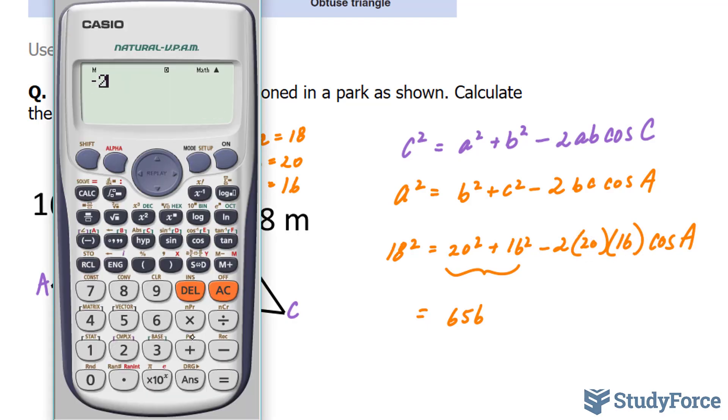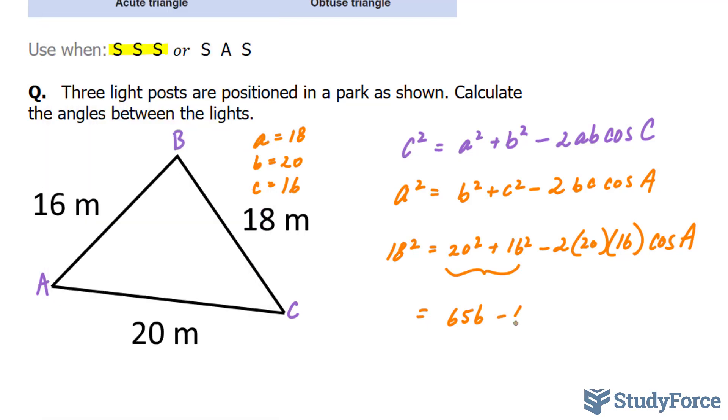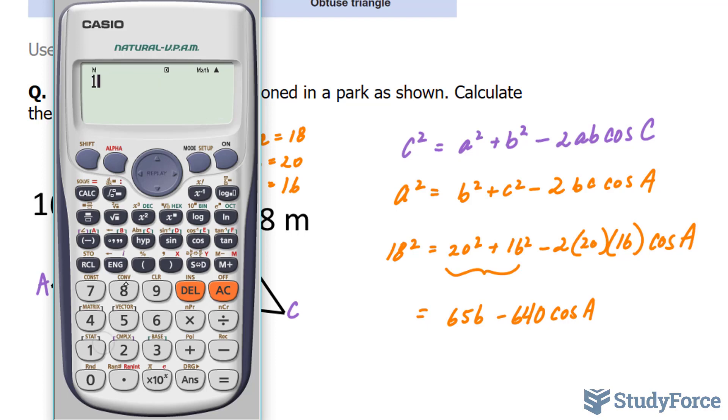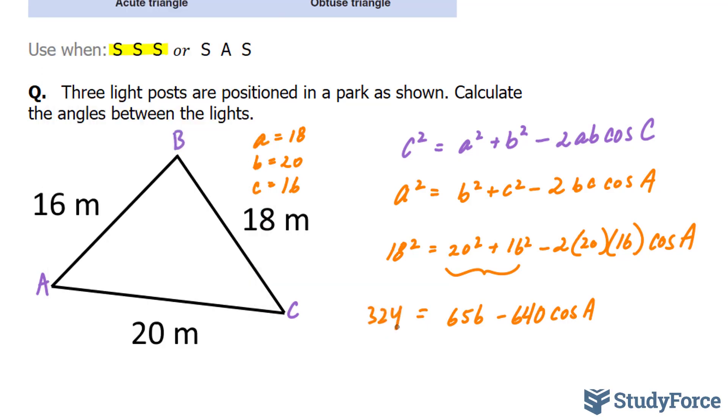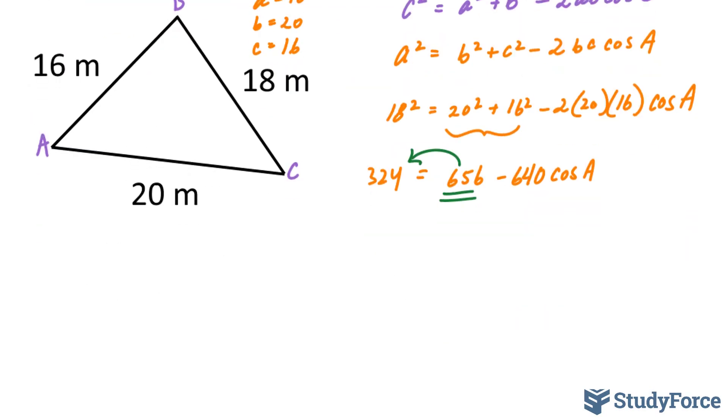Negative 2 times 20 times 16. And this gives us -640 cos A. And the left side, 18 squared, is equal to 324. Once you've done this, you want to take this number to the left side, where you will be collecting like terms next. So let's go ahead and do that. If you take this positive number over, you end up with a negative number.